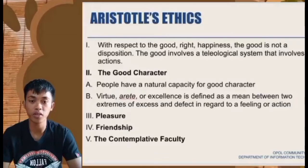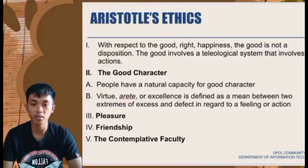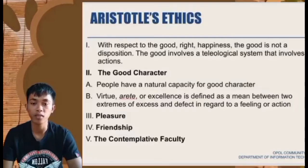Aristotle's ethics covers five key areas. First, with respect to the good and happiness — the good is not a disposition; it involves a teleological system that involves actions. Second, good character — people have a natural capacity for good character; virtue, or excellence, is defined as a mean between two extremes of excess and defect in regard to a feeling or action. Third, pleasure. Fourth, friendship. Fifth, the contemplative faculty.